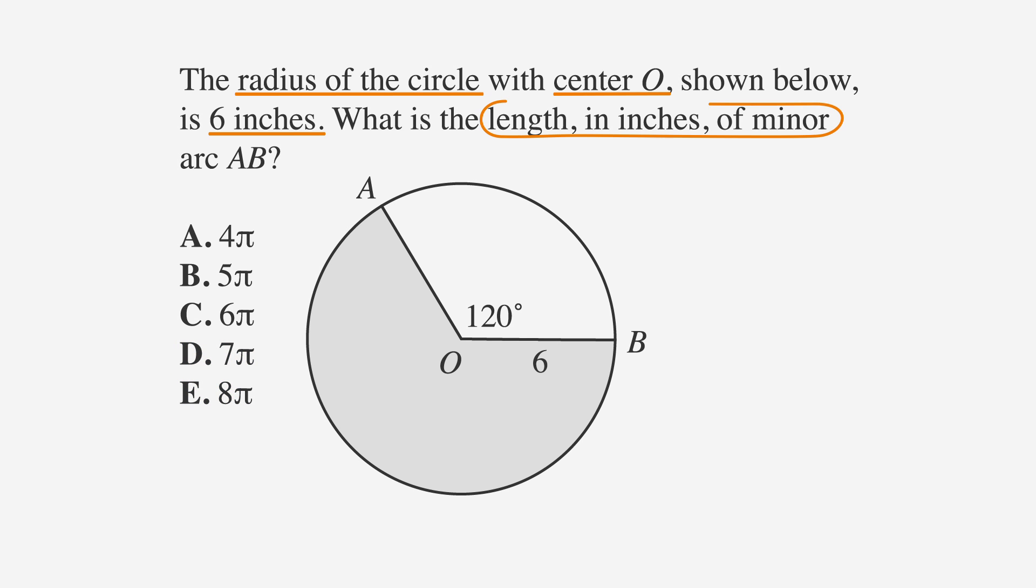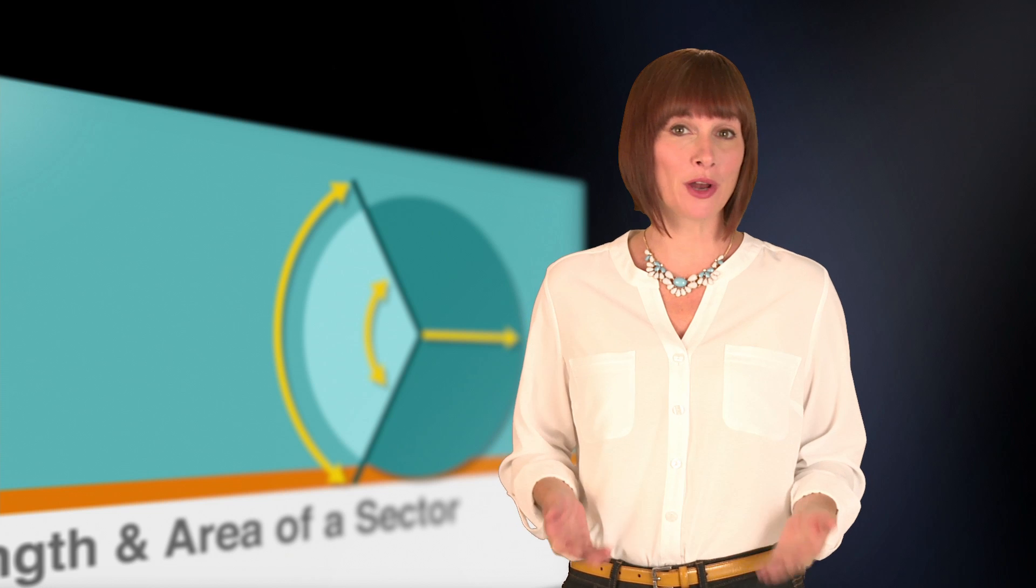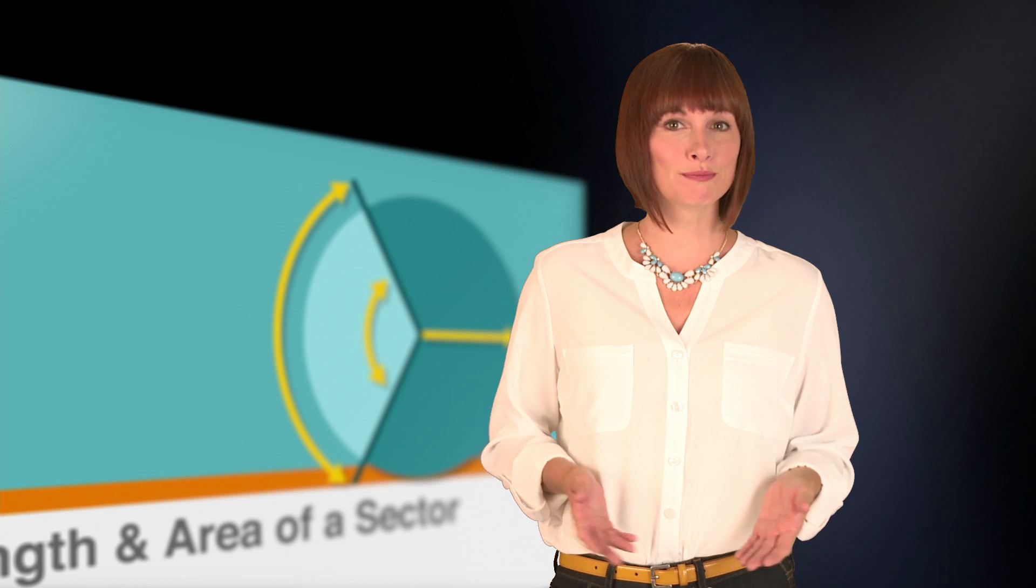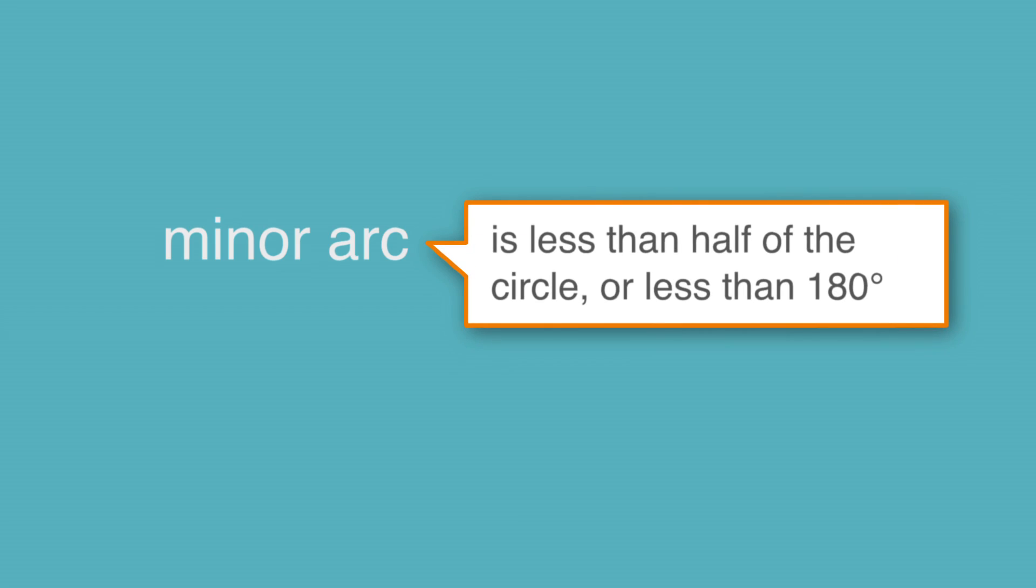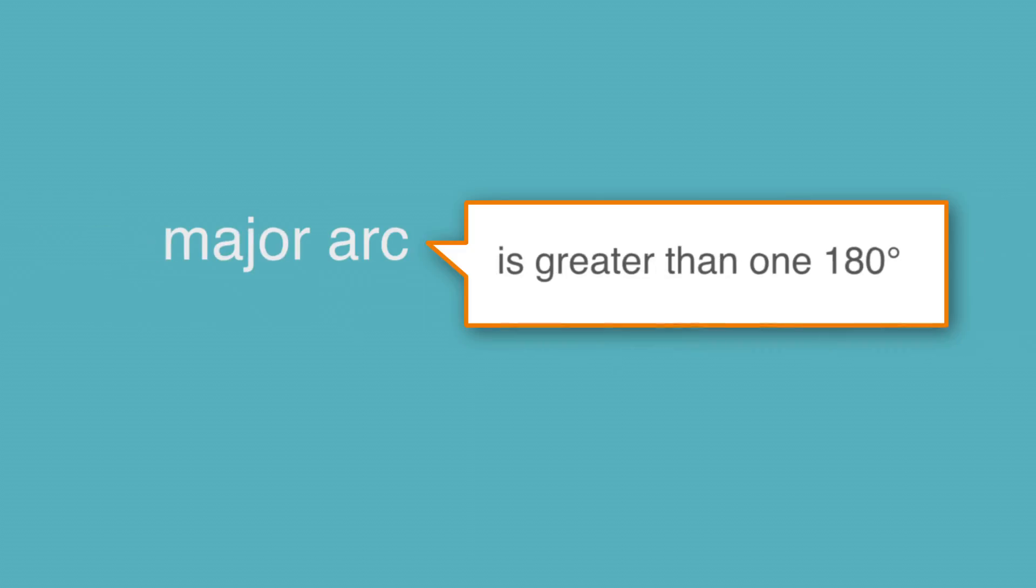Let's underline the facts, circle the keywords, and label the answer choices. You might be wondering what a minor arc is, so let's get a definition before we move forward with this problem. A minor arc is less than half of the circle, or less than 180 degrees. A major arc, on the other hand, is greater than 180 degrees.